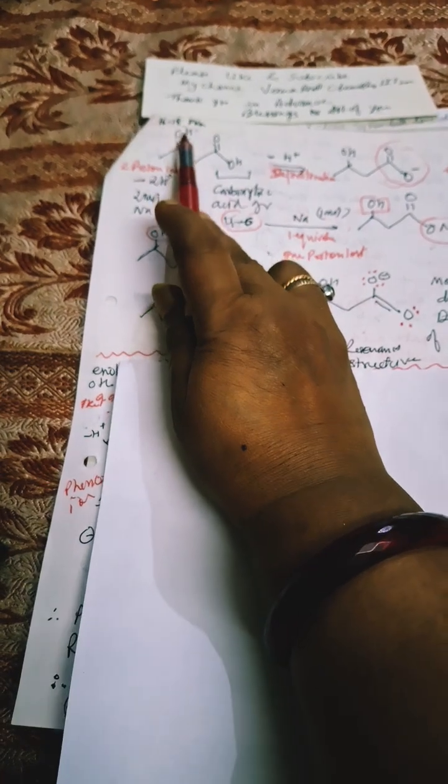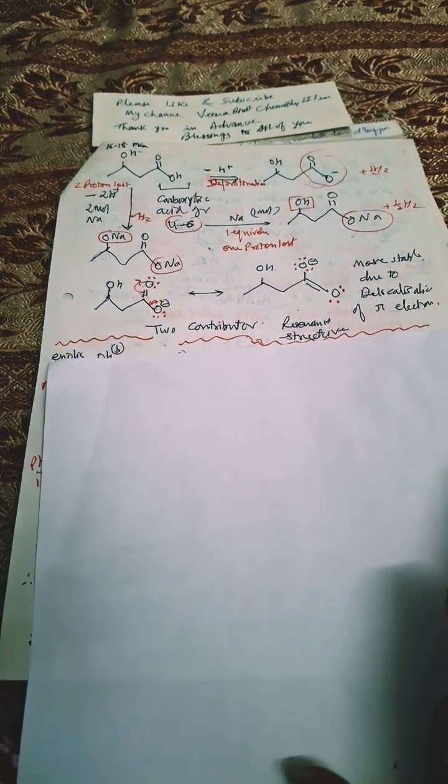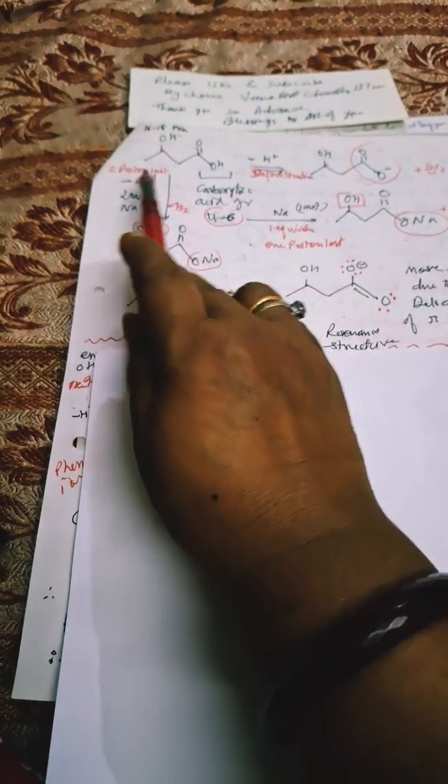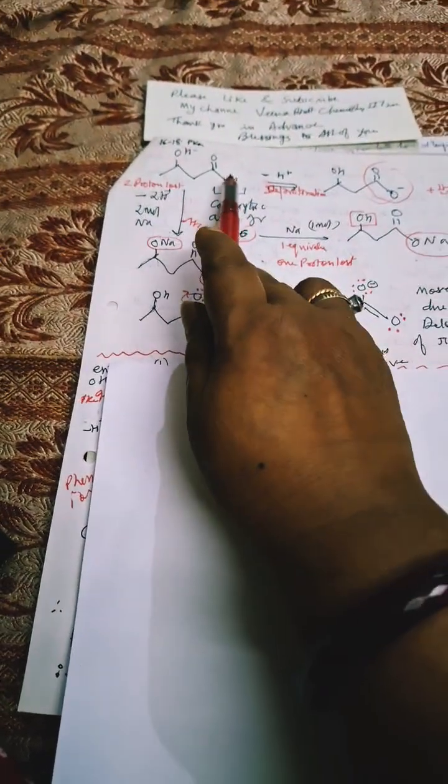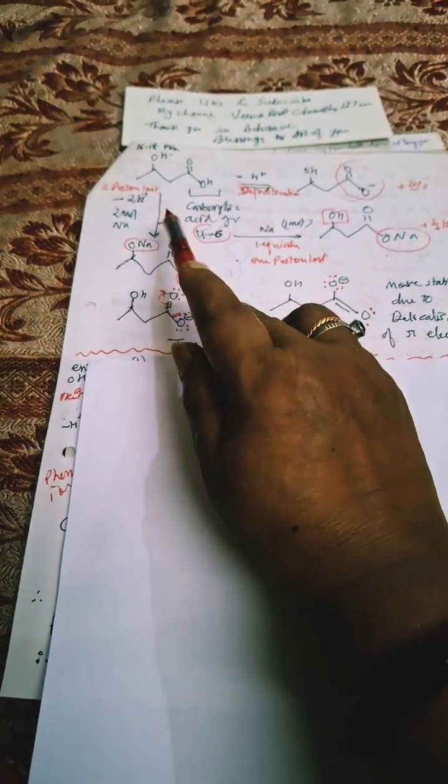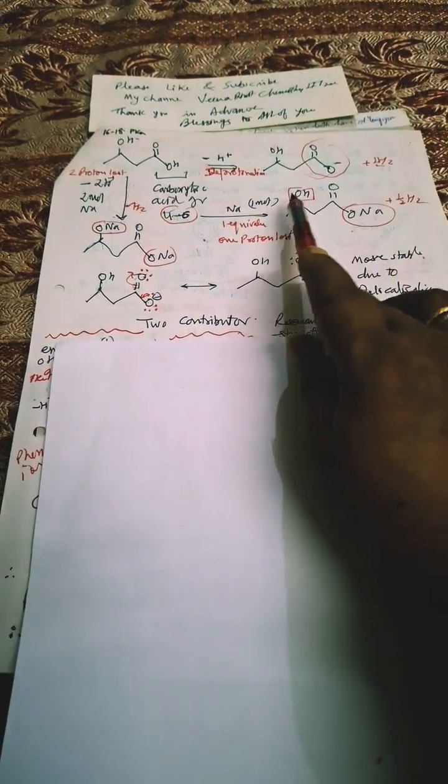This can lose proton but not as readily as compared to this. So when two moles of Na will be there, then this and this both will be replaced and we'll get hydrogen. Here one mole of hydrogen gas will get, here half mole of hydrogen gas will get.